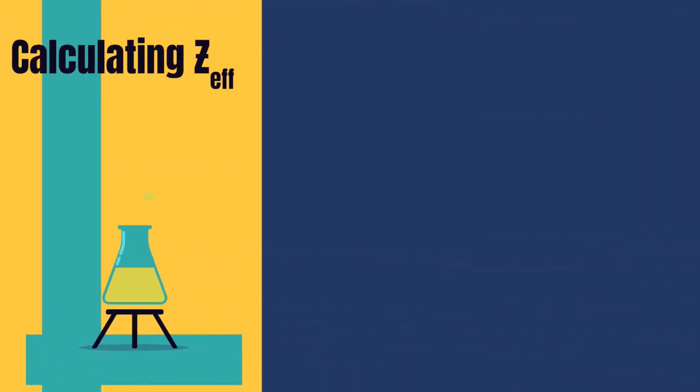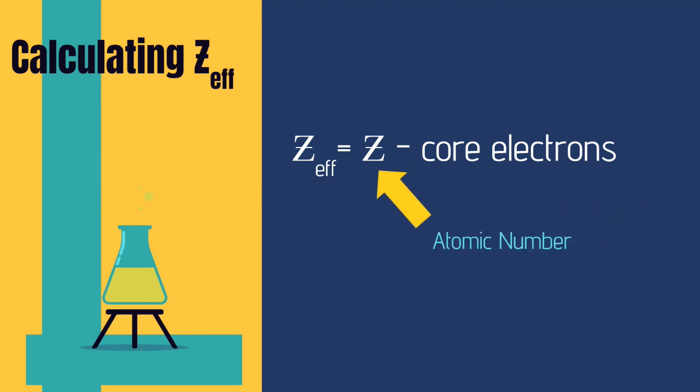In order to calculate Z-eff, you really just need to know two things. First, look up the atomic number of the element in question. This is just the number of protons and it's found on the periodic table. Next, you're going to need to figure out how many core electrons that element has. Now remember, the core electrons are all the electrons that are not valence electrons. Once you have these two numbers, you subtract the number of core electrons from the atomic number. And this will give you a positive value. This is the effective nuclear charge.